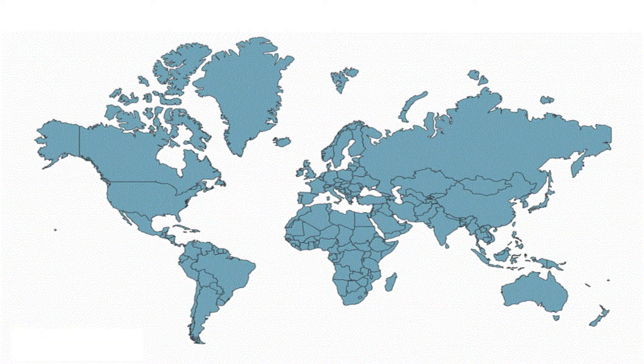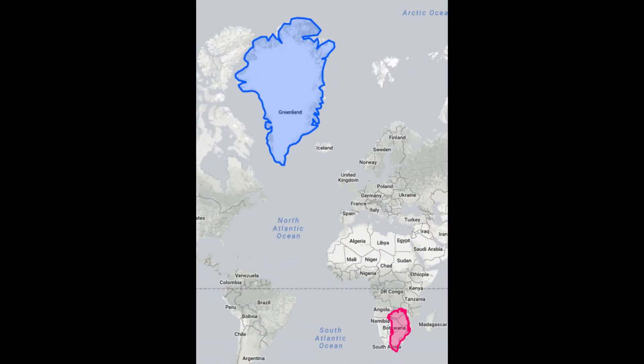One of the best known and commonly used world maps, the Mercator Projection, depicts Greenland and Africa as being roughly the same size. In reality, Africa is 14 times larger.